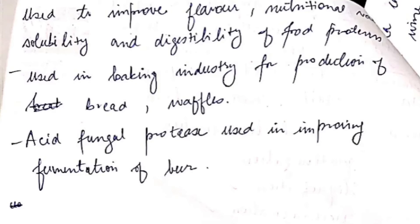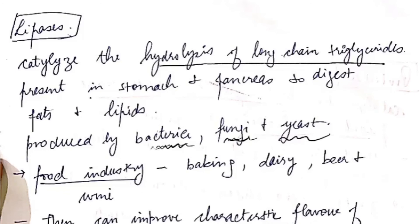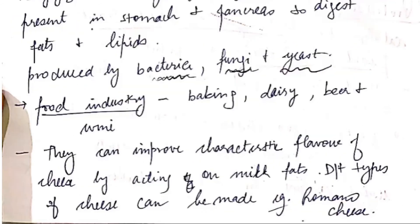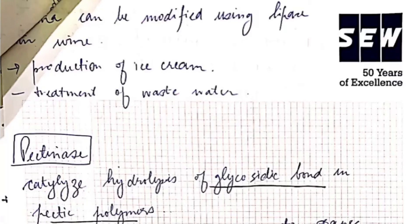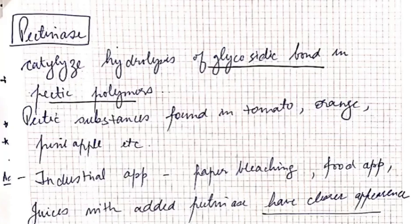The next enzyme is lipase. It catalyzes the hydrolysis of long-chain triglycerides present in the stomach and pancreas to digest fats and lipids. It is produced by bacteria, fungi, and yeast. In the food industry it can be used in baking, dairy, beer, and wine applications. It can improve the flavor characteristics of cheese by acting on milk fats; different types of cheese can be made. It is also used for the production of ice cream and the treatment of wastewater.